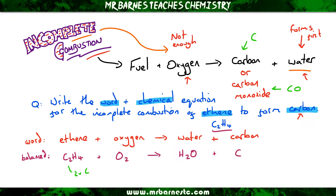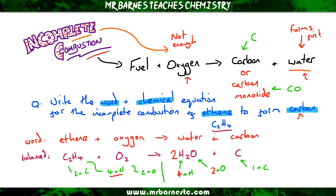In terms of balancing: I've got two carbons and four hydrogens on the left, plus two oxygens, and on the right I've got two hydrogens, one oxygen, and one carbon. Looking at hydrogen — I've got four on the left and only two on the right, so I need to double my H2O. That gives me four hydrogens and doubles my oxygen to two, balancing both. For carbon I've got two on the left and one on the right, so I put a two in front of C, and that balances it.